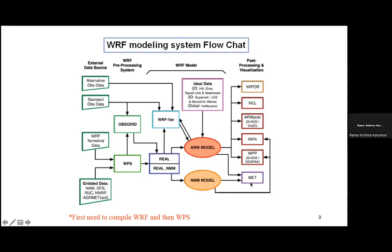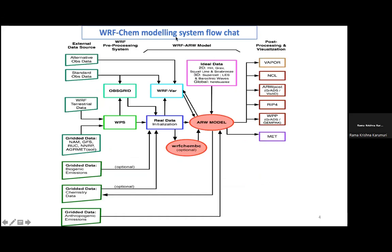The WRF-Chem flowchart is similar to WRF but requires additional inputs: emissions from industries and road transport (anthropogenic emissions), natural emissions such as sea spray and biogenic emissions, and fire emissions from forest fires. In addition to atmospheric initial conditions, we also need to provide chemical initial conditions to the model.